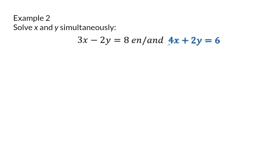In the second equation, all the coefficients are even numbers, and this is an indication that it might be possible to work without fractions. I'm going to aim to get y alone, because it's the smallest coefficient, and for that I'm going to start by subtracting 4x on the right. Next, I need to divide by 2 straight through to get 3 minus 2x on the right. So here I don't have any fractions.